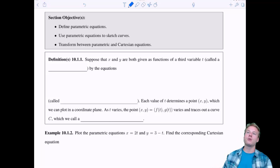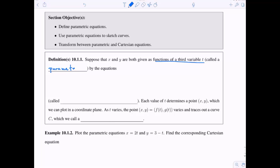So let's get to it with the definition. We're going to suppose that x and y are both given as functions of a third variable t. Usually I think of this as time, but it's called a parameter. So they're given by some equations f of t and g of t, so some function of time.